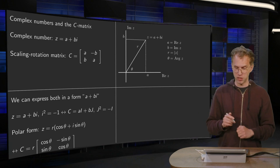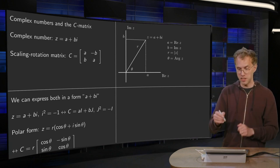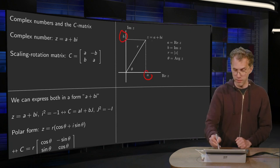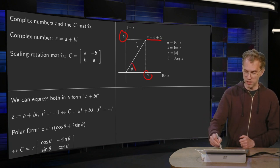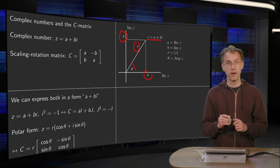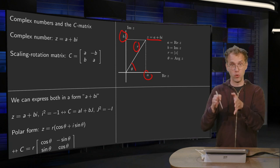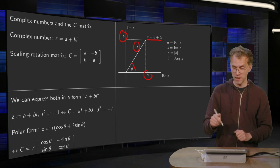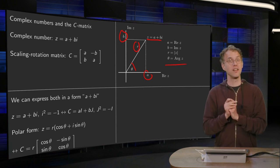If we look at the picture, we have our complex number z written in the complex plane with real part a and imaginary part b, giving z equals a plus bi, with angle theta and norm r. Then: a is the real part of z, b is the imaginary part of z, r is the norm of z — which is the scaling factor of the scaling rotation matrix — and theta is the argument of z, which is the rotation angle of the scaling rotation matrix.